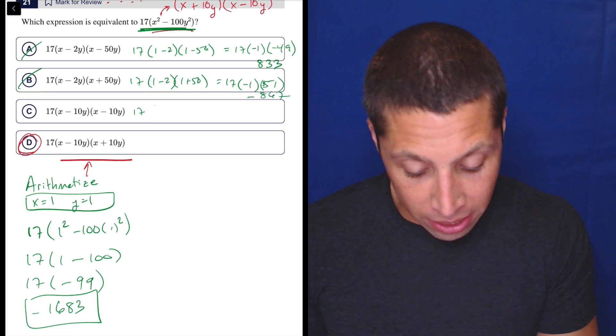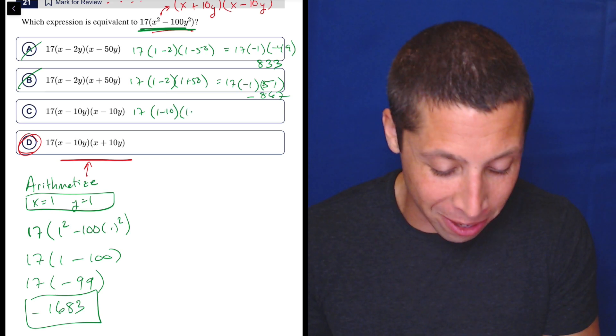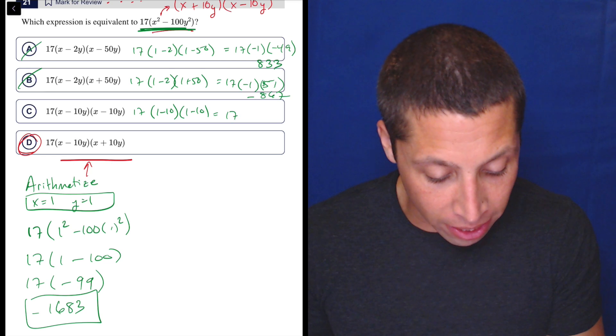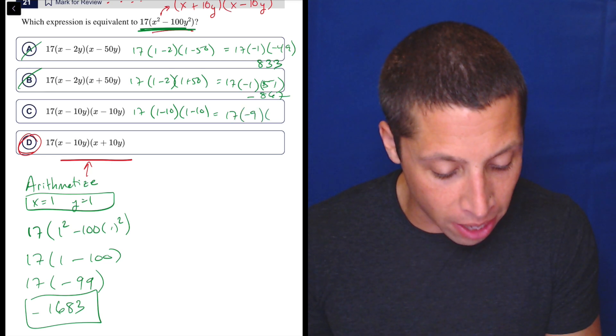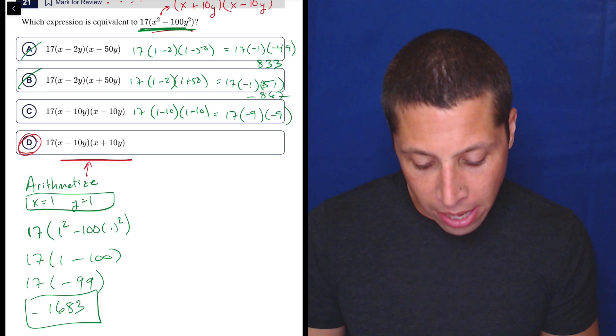So 17 times 1 minus 10, so 1 minus 10 is, I'll just show you, 1 minus 10, 1 minus 10. So already I can see the problem here is that I'm going to have the wrong sign. This is negative 9 times negative 9. So those two negatives are going to make a positive, but I want a negative number.